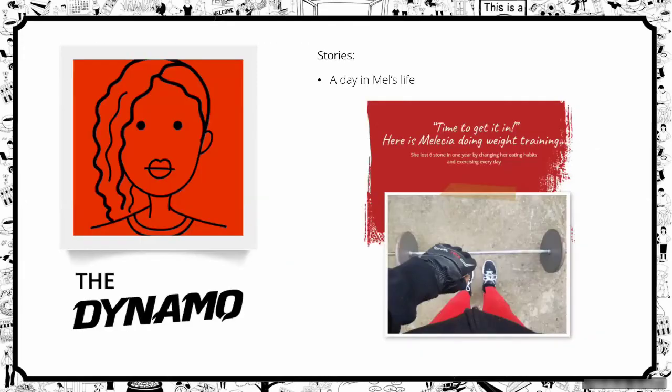Mel, one of the participants, was a real dynamo. She really liked to editorialize — she drove what she wanted to tell you. You might have had a set of objectives, but she was having none of that. She was amazing at telling you what was on her mind. She dipped in and out of the process, wanted to drive what and how she told us things, and curated her life very much in her own way.